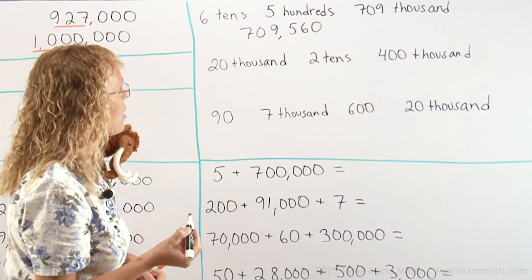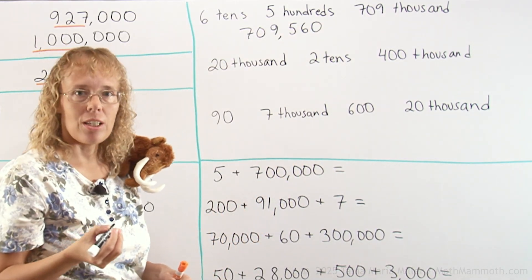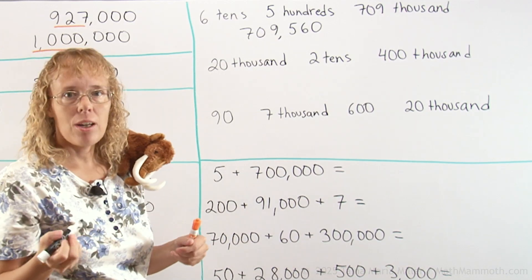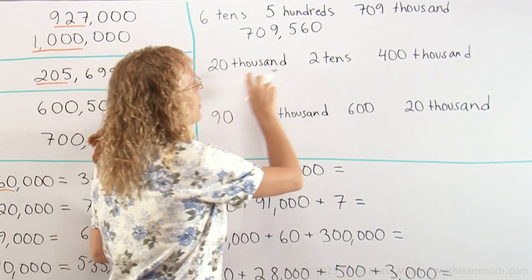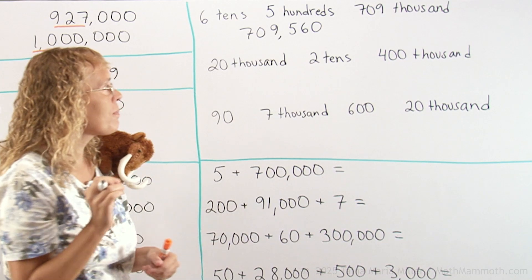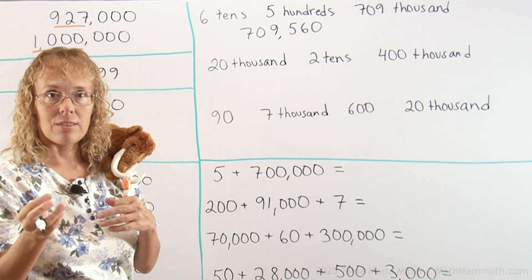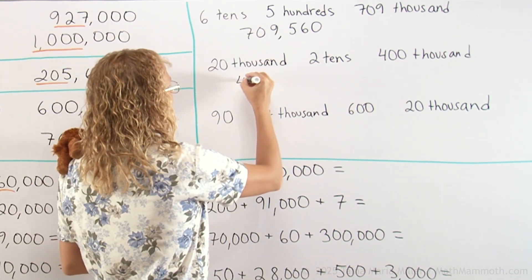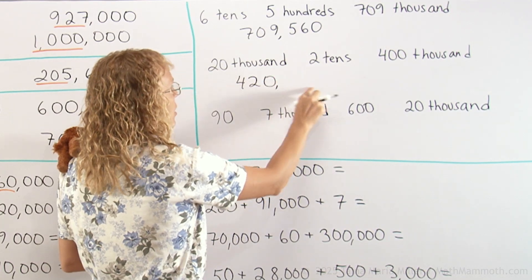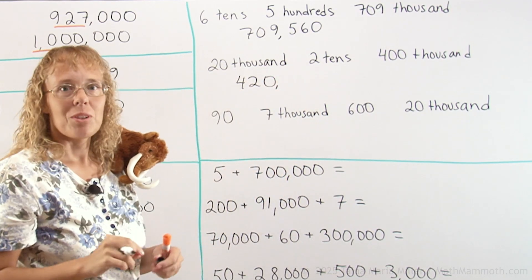And then twenty-thousand, two-tenths, four-hundred-thousand. First, let's gather the thousands. There's twenty and four-hundred-thousand. So four-hundred-twenty-thousand, right? Four-hundred-twenty-thousand. And then over here we have two-tenths, which is twenty.